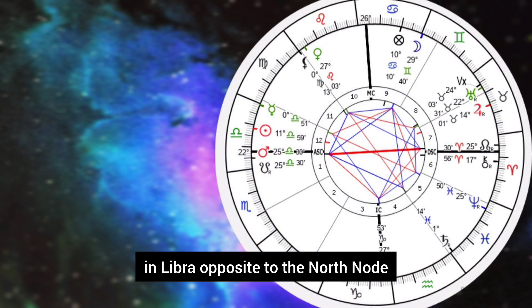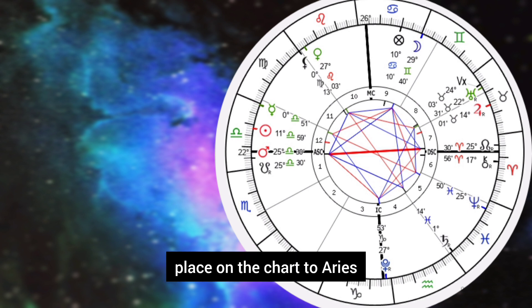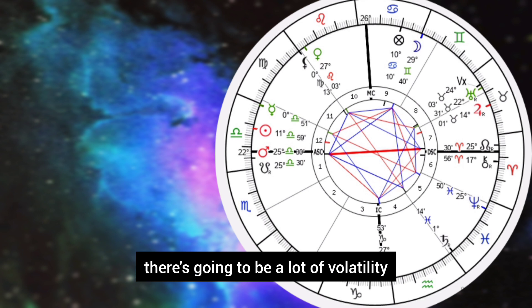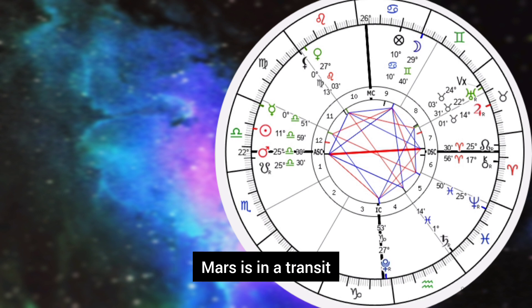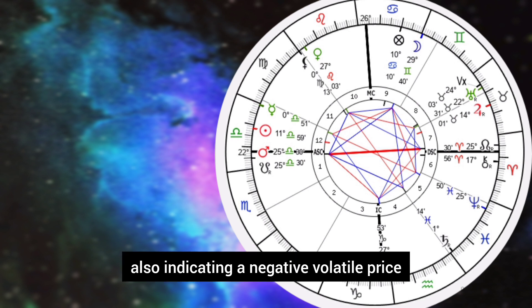On the fifth we have Mars in Libra opposite to the north node. This is challenging. Mars in Libra is the opposite place on the chart to Aries. It's in 25 degrees which is an Aries degree. It's a bit extra very fiery because Mars is the ruler of Aries as well. I believe with this transit today there's going to be a lot of volatility. Mars is in a transit indicating volatility in prices, and for the fact that it's opposite to the north node, this is also indicating a negative volatile price movement.